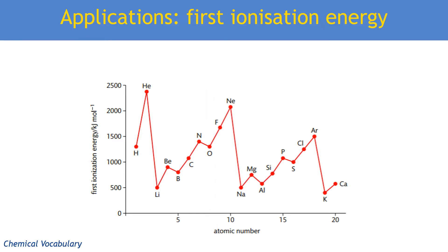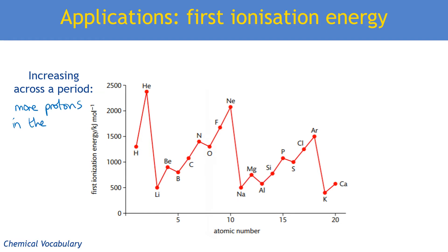If you have covered atomic structure, you will also have answered questions about ionization energy. First ionization energy shows a general increase across a period from left to right. Each element has one more proton in the nucleus as you go across the periodic table. Importantly, the shielding effect is the same because these electrons are added to the same principal energy level or shell — there are no extra shells between the nucleus and the outer electrons. This results in an increased attraction.